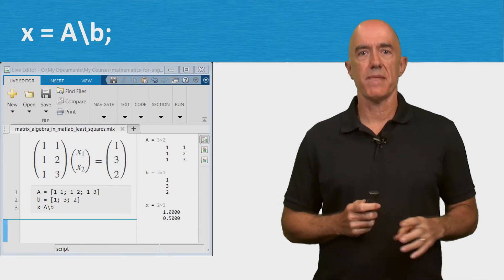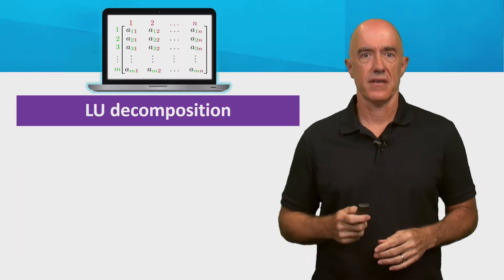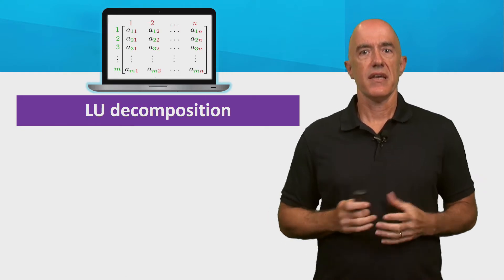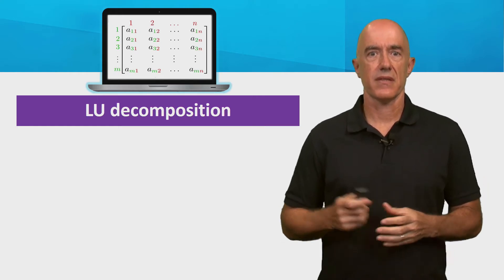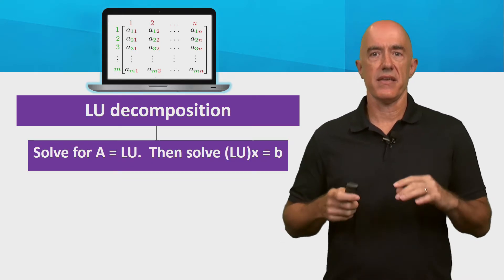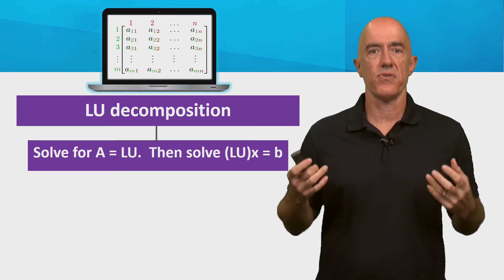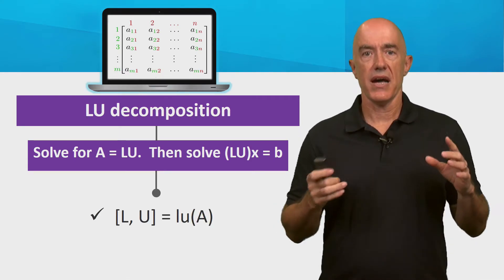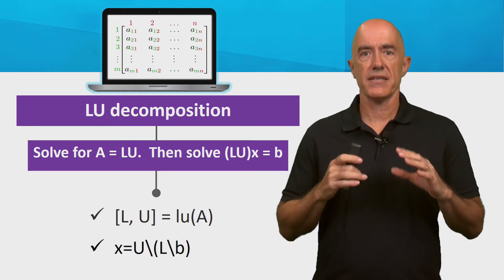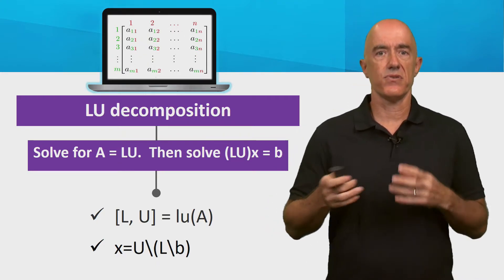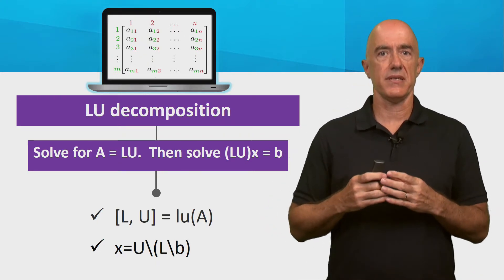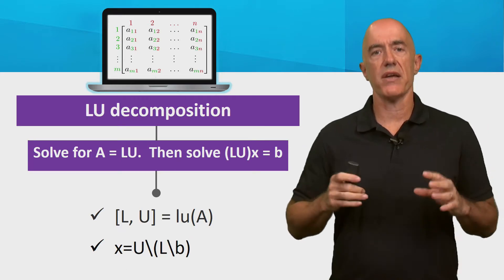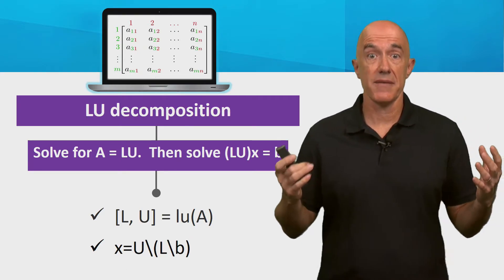Now let's find the LU decomposition of a square matrix. If you're solving a problem with a fixed matrix and many different right-hand sides, it's faster to first find the LU decomposition. MATLAB can solve A equals LU, and then solve LUX equals B. To find L and U, you use the MATLAB function LU. Then to solve LUX equals B, you solve for X using U backslash open parentheses L backslash B close parentheses. The parentheses are required in this expression.